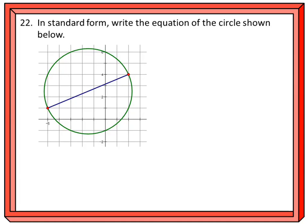In standard form, write the equation of the circle shown below. The equation of a circle in standard form is (x - h)² + (y - k)² = r². Here, h and k represent the center point.